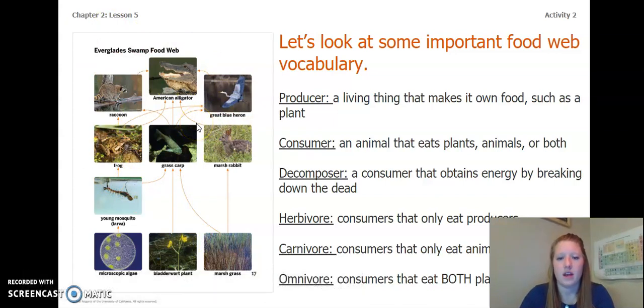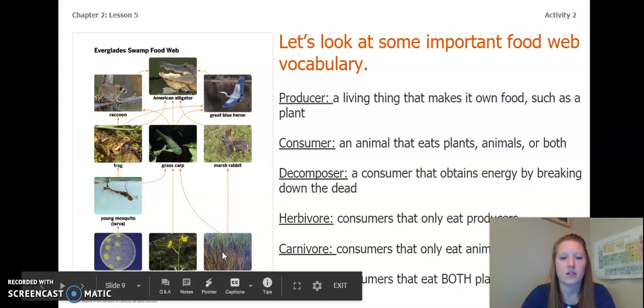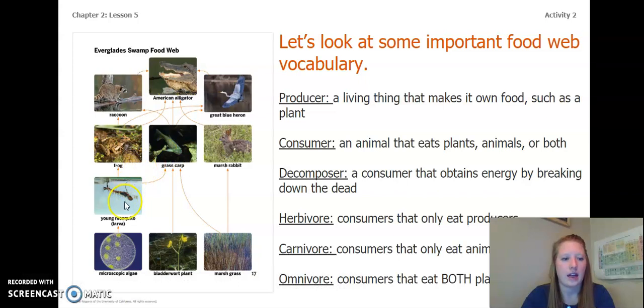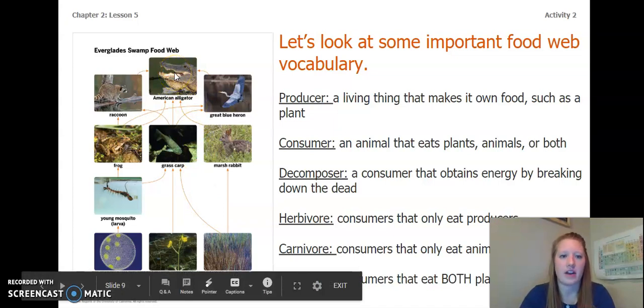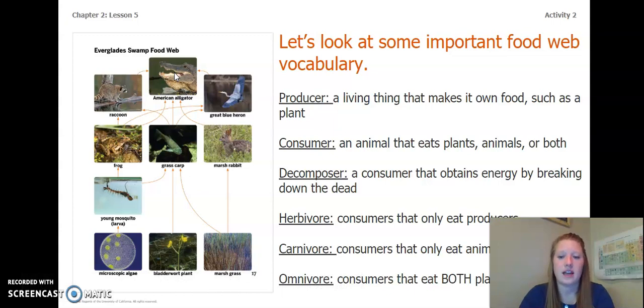A decomposer is a consumer that obtains energy by breaking down the dead. I do not see any decomposers in this image. But remember, they're things like bacteria or mushrooms. A herbivore is a consumer that only eats producers or plants. So in this case, our herbivores are a rabbit, grass carp, and a young mosquito larva. Carnivores are consumers that only eat meat. So that would be our great American alligator. And an omnivore are consumers that eat both plants and animals. So that would be our raccoon and maybe our great blue heron.